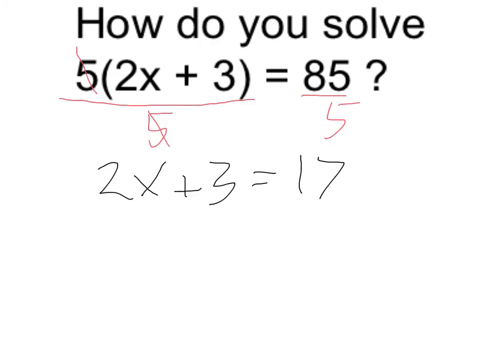Now I have a two-step equation. I want to undo the addition and the multiplication. Reverse order of operations will dictate I want to undo the addition with subtraction first, and that leaves me with 2x equals 14.